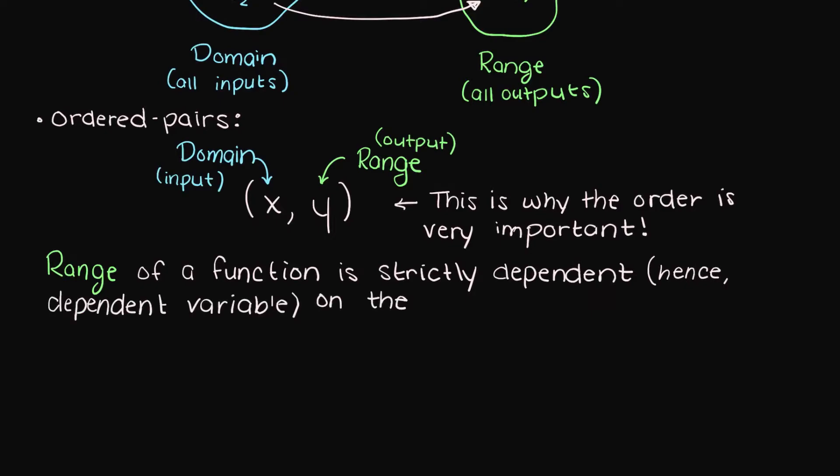Therefore, our set of values in the range is strictly dependent on the domain of the function. That is, the domain of the function directly alters what values can be achieved within the range. To find the range it is typically easiest to graph the function, so let's do a couple examples to make sure we understand.